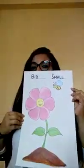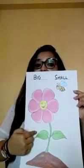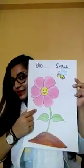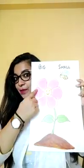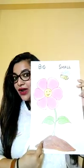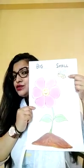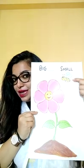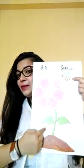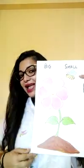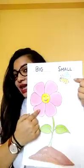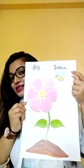Now, what is this? This is a flower. This is a big flower, and this is a small honeybee. Big and small.